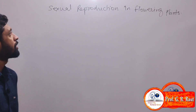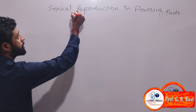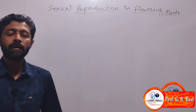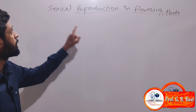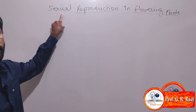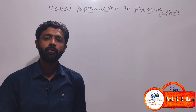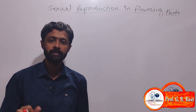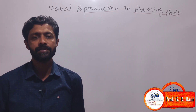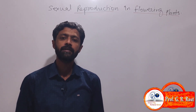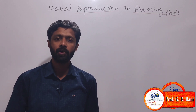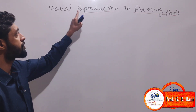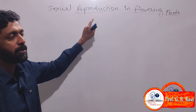Today we consider reproduction in the flowering plant, and specifically only sexual reproduction. We have considered asexual mode of reproduction in the previous chapter covering reproduction in primitive organisms. Here we consider only sexual reproduction in flowering plants.